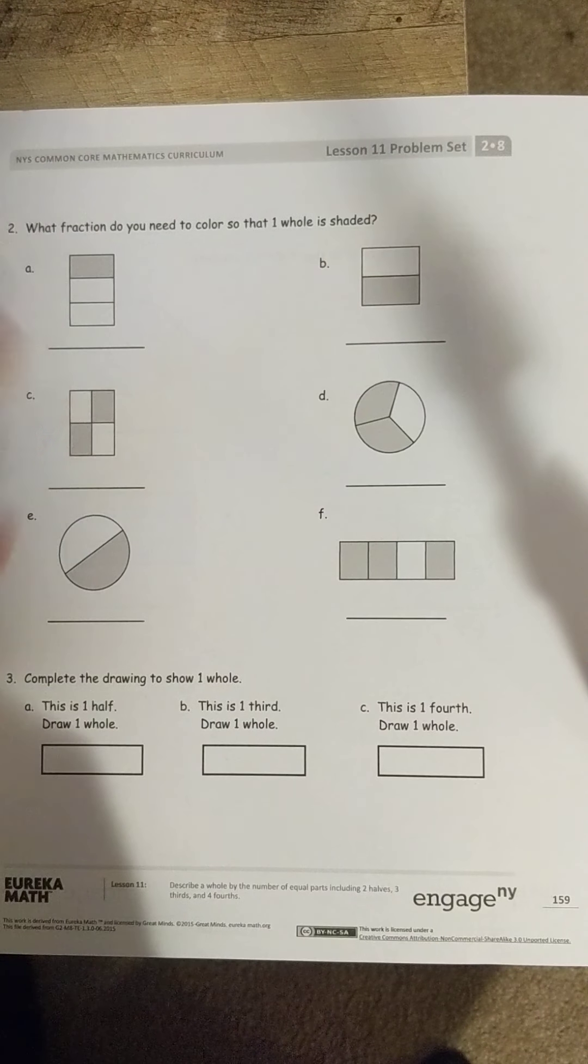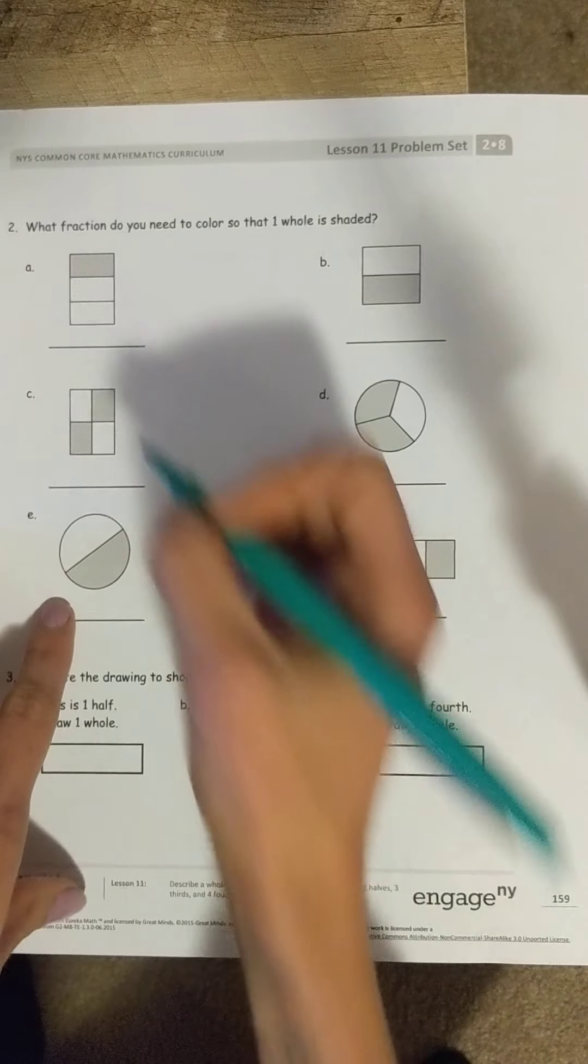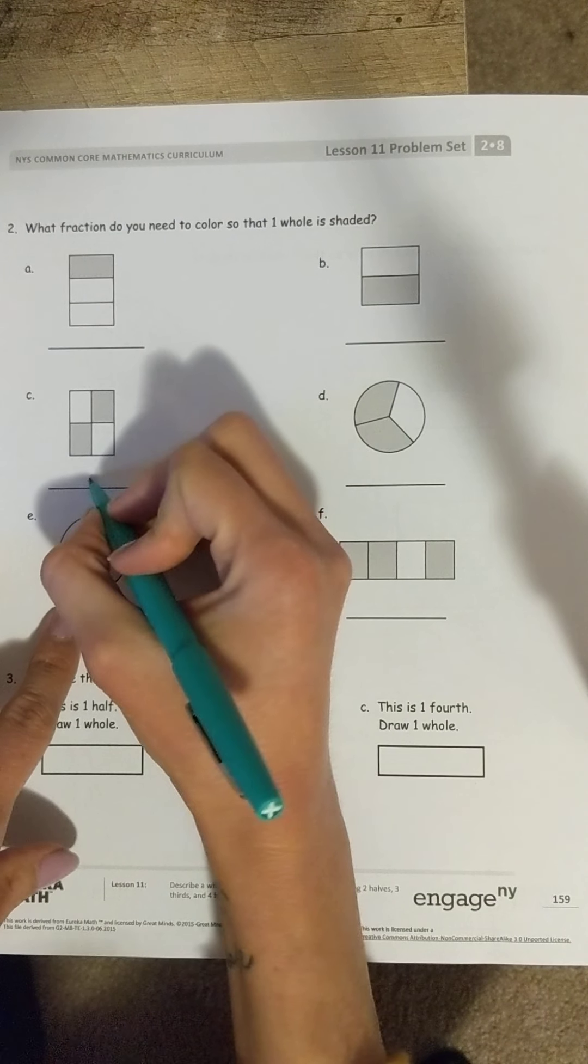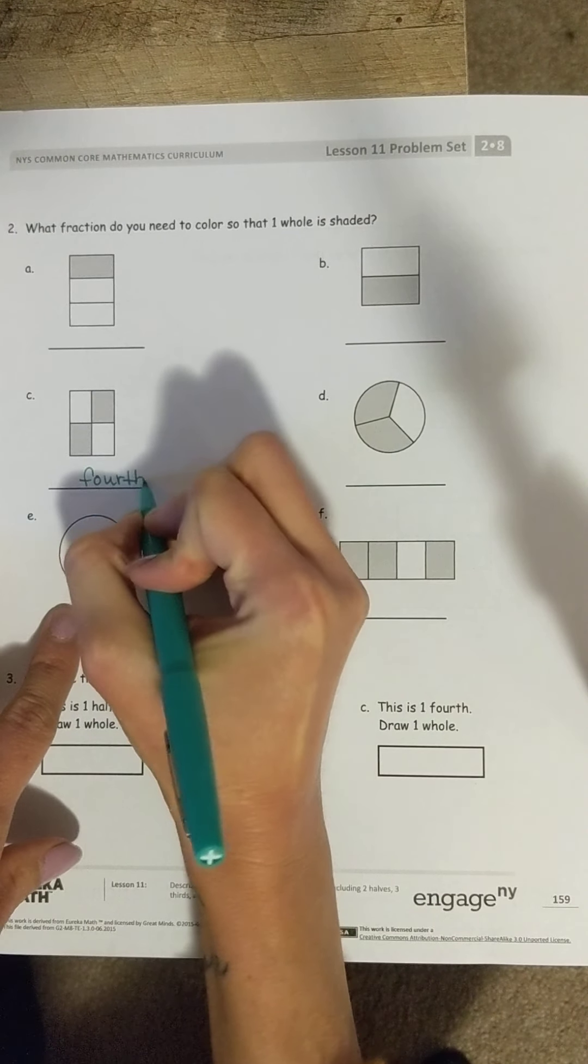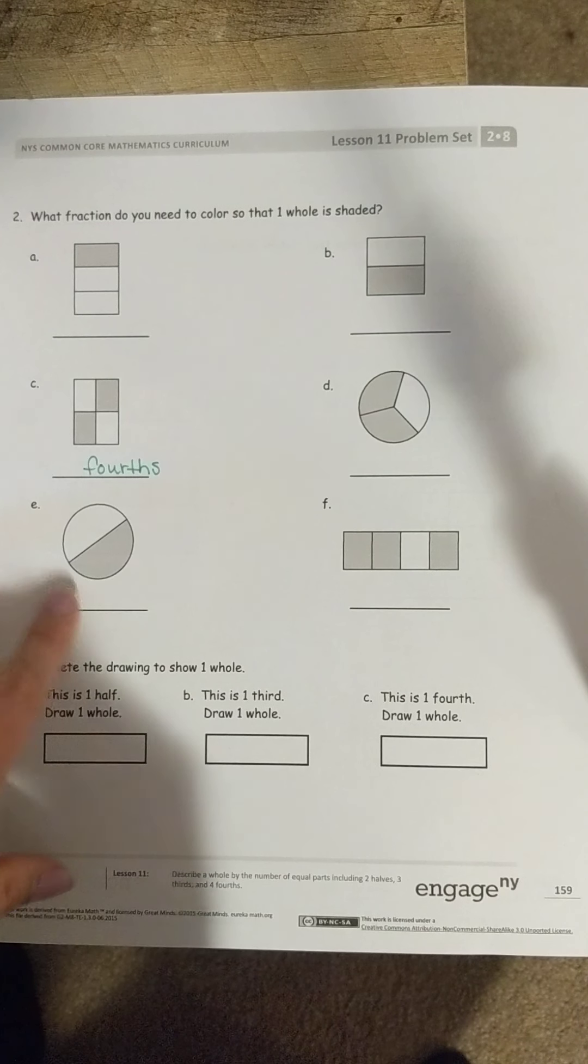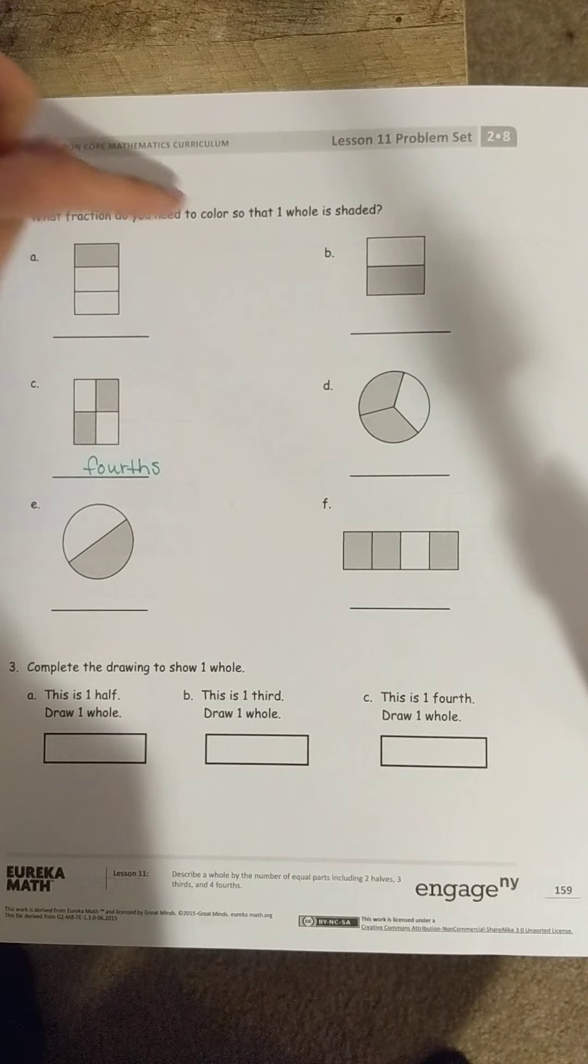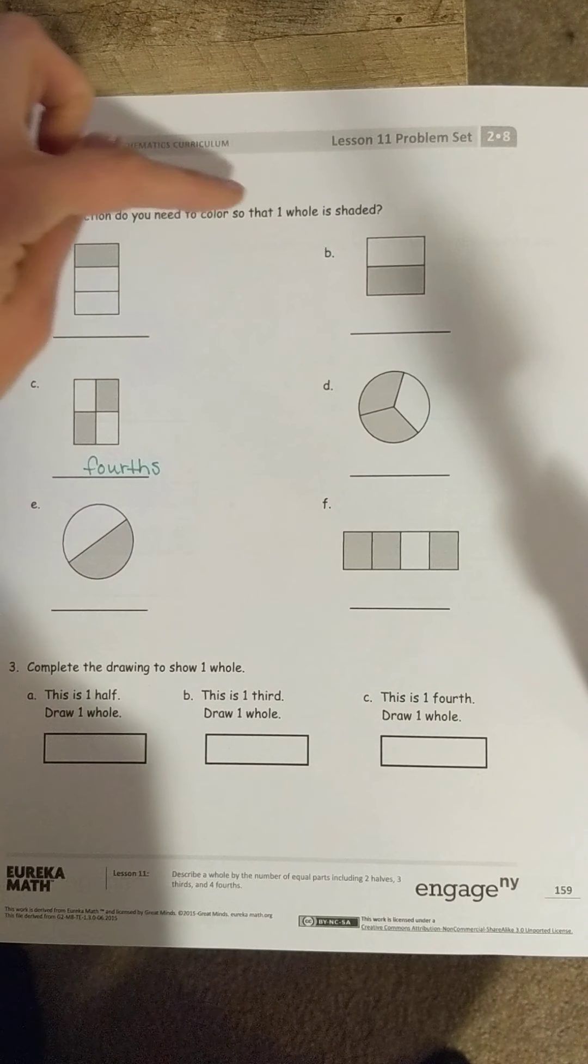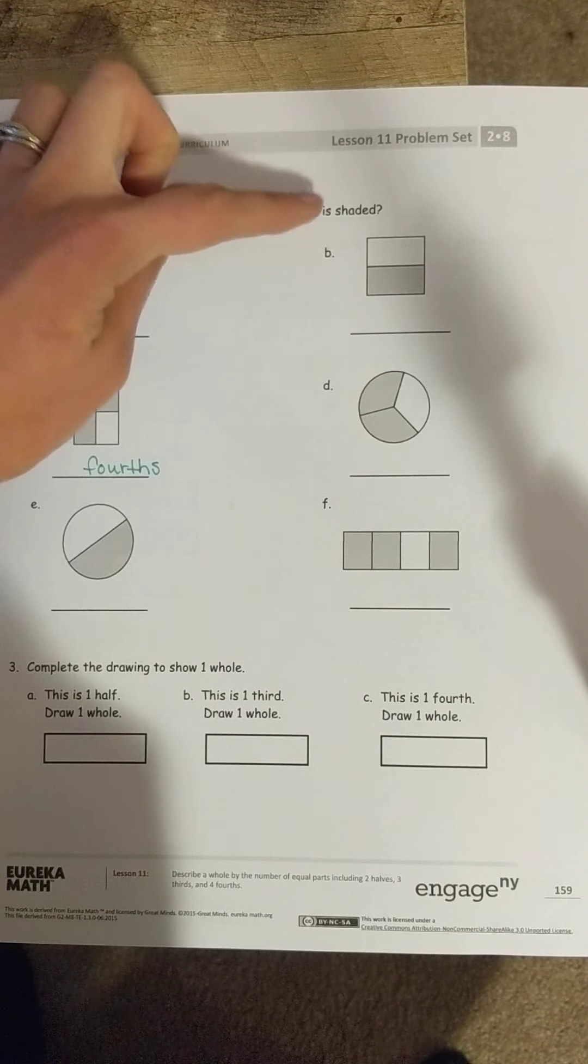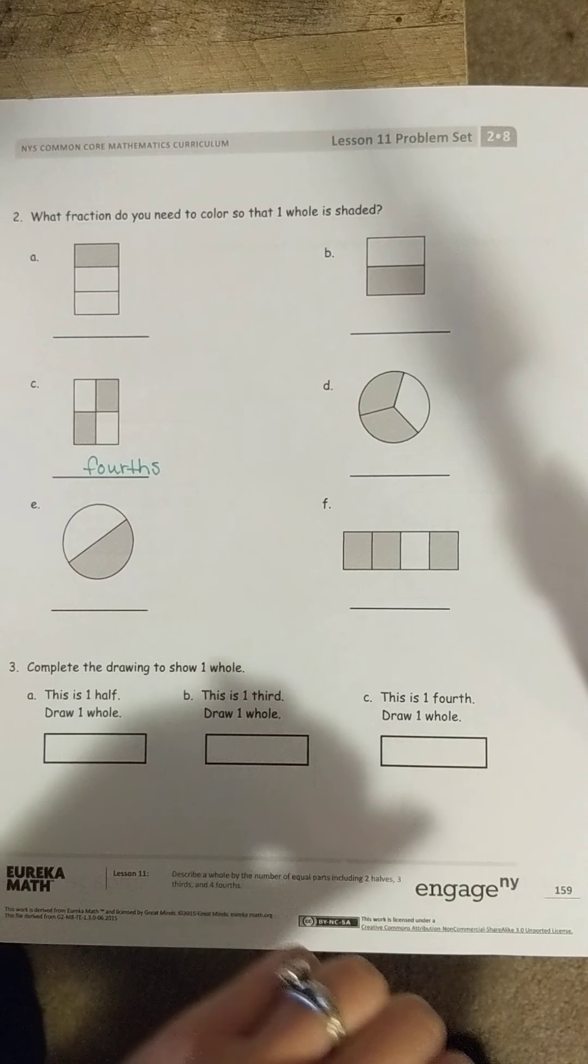If I look at this shape, it's split into four equal pieces. One, two, three, four. So, I know it's split into fourths. So, I'm going to write that down. And then, it wants me to say, what fraction do you need to color so that one whole is shaded in?